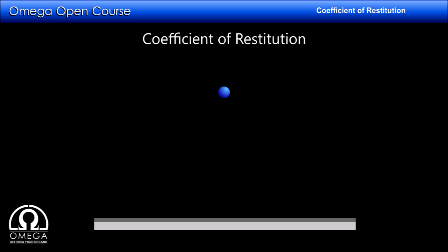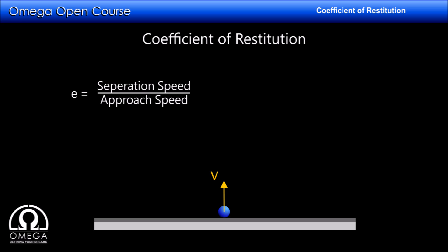For example, if you drop a ball on the floor, after the collision the ball rebounds. Consider the point where the ball collides with the floor. Assume its speed just before the collision is u and it rebounds with velocity v after the collision. The coefficient of restitution e is the separation velocity divided by the approach velocity — in this case v divided by u.